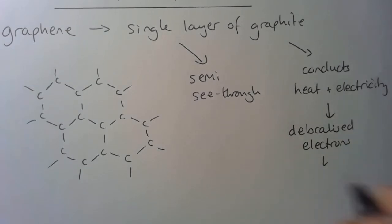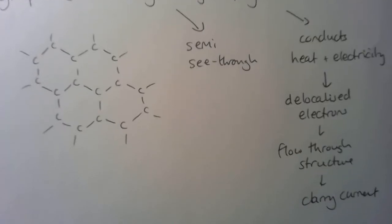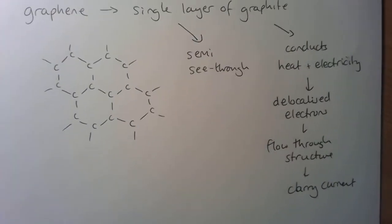So we've got delocalized electrons in the structure, and these can flow through the structure. And if they can flow through the structure, they can carry a current or charge. So that's why graphene, like graphite, is able to conduct electricity.